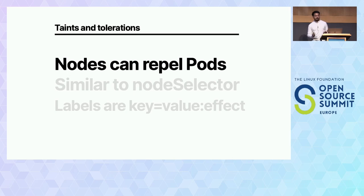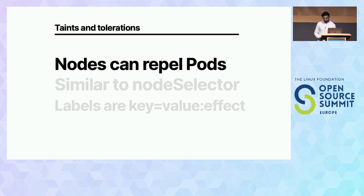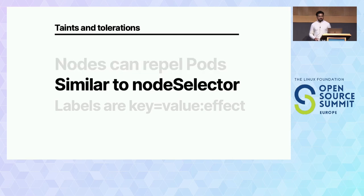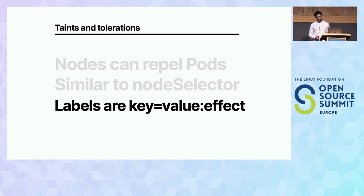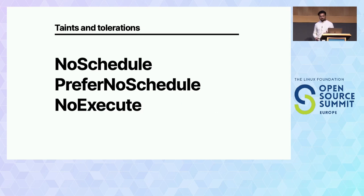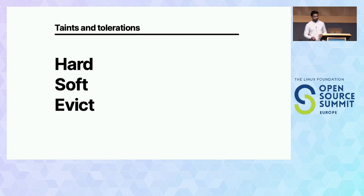This is the last customization in terms of giving hints to the scheduler. What we've investigated so far is whoever writes the deployment file is in charge of what gets deployed where. But now, whoever is in charge of the cluster — an administrator — can decide where your pods actually end up. Nodes can repel pods. Some nodes can reject pods you're trying to deploy. It's similar to node selector, but every node has a label that comes with an effect.